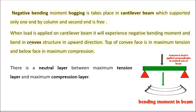Negative bending moment, or hogging, takes place in a cantilever beam which is supported at only one end by a column and the second end is free. When load is applied on a cantilever beam, it will experience a negative bending moment and bend in a convex structure in the upward direction. The top of the convex face is in maximum tension and the lower face is in maximum compression.